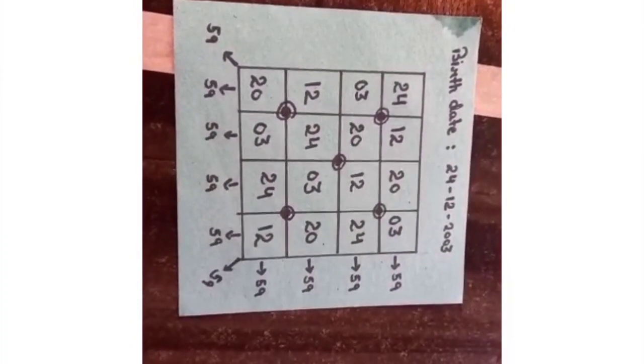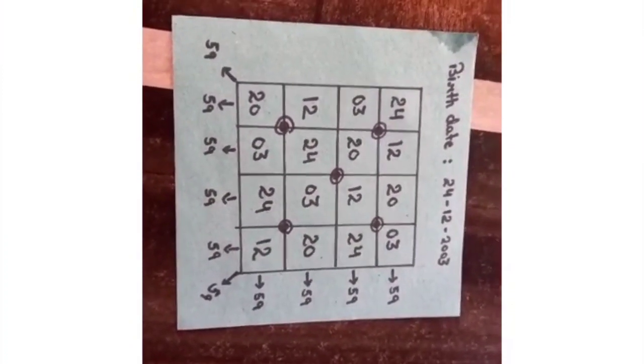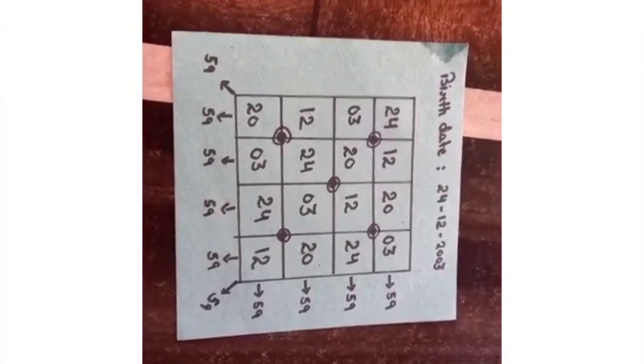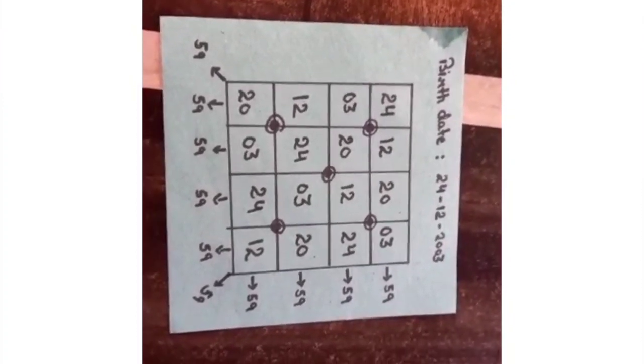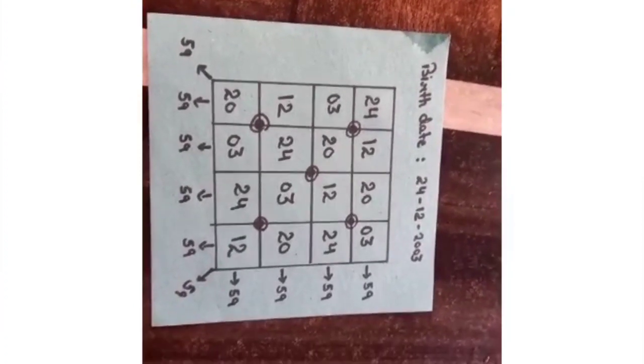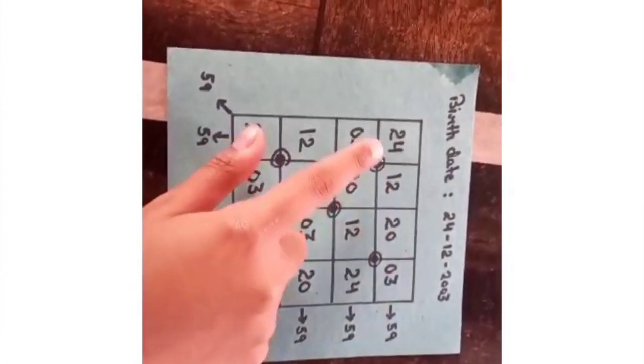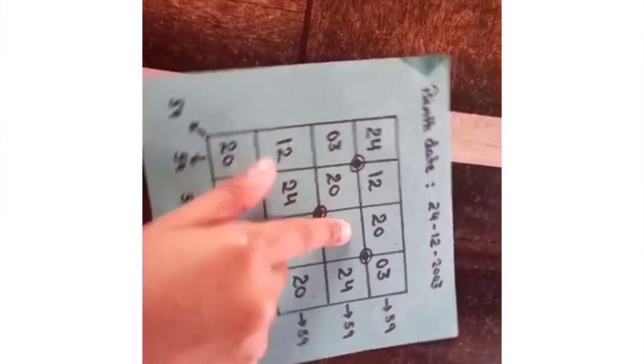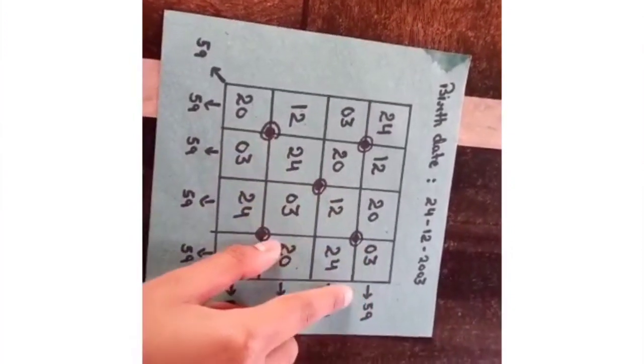I have made a square with four rows and four columns. Now, I have written 24, 12, 2, 0, 0, 3 in each box. If you will sum up this line, it will sum into 59.